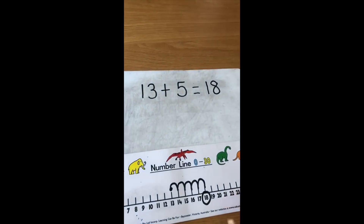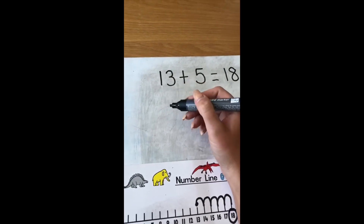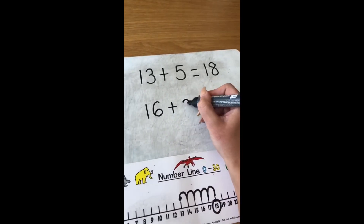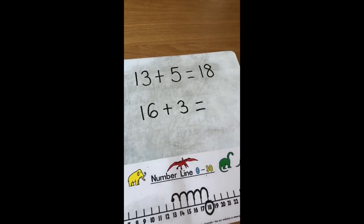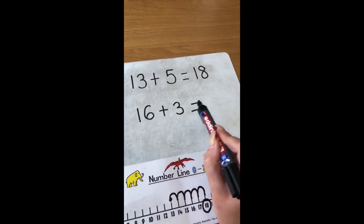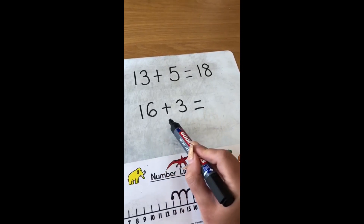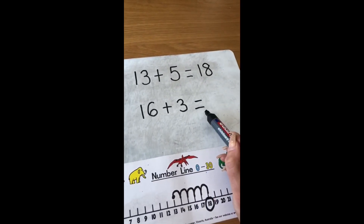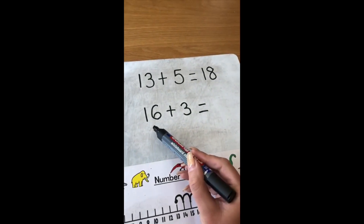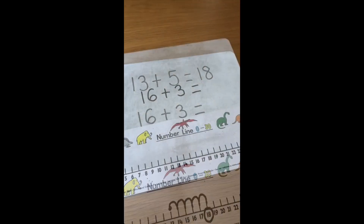Right, I'm going to write one now for you to try and have a go at. Let's go through it together — 16 add three equals. Pause the video now and see if you can have a go on your number line, answering 16 add three equals. See if you can find the total altogether. Let's see how you got on.